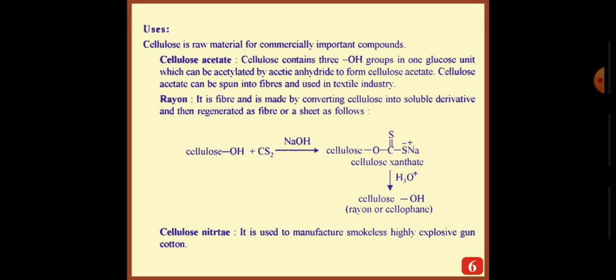When cellulose is treated with carbon disulfide in presence of NaOH, it forms cellulose xanthate. This cellulose xanthate on hydrolysis in acidic medium leads to the formation of rayon or cellophane. Cellulose nitrate is used to manufacture smokeless, highly explosive gun cotton.